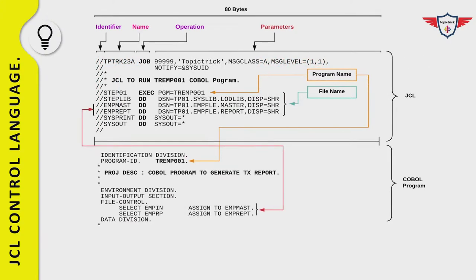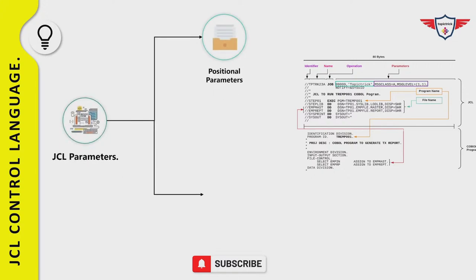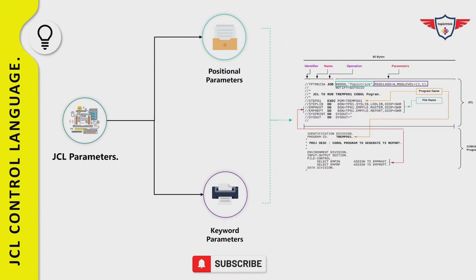JCL parameters are broadly categorized into two categories: positional parameters and keyword parameters. A positional parameter must be placed in a specific position within the JCL statement. If you want to omit a positional parameter, you must replace it with a comma. For example, two positional parameters are used: accounting information (five nines) followed by username (TopicTrick), both highlighted in green.